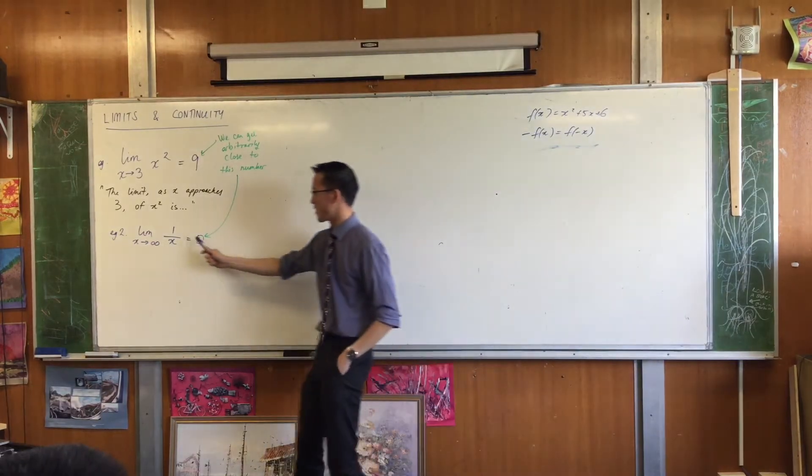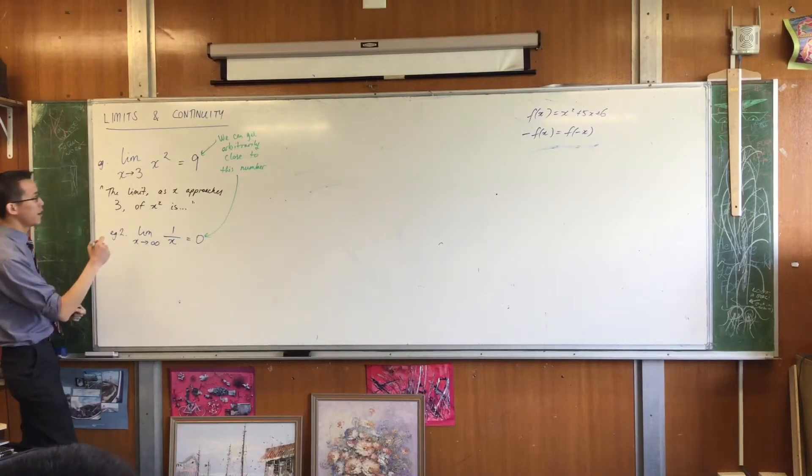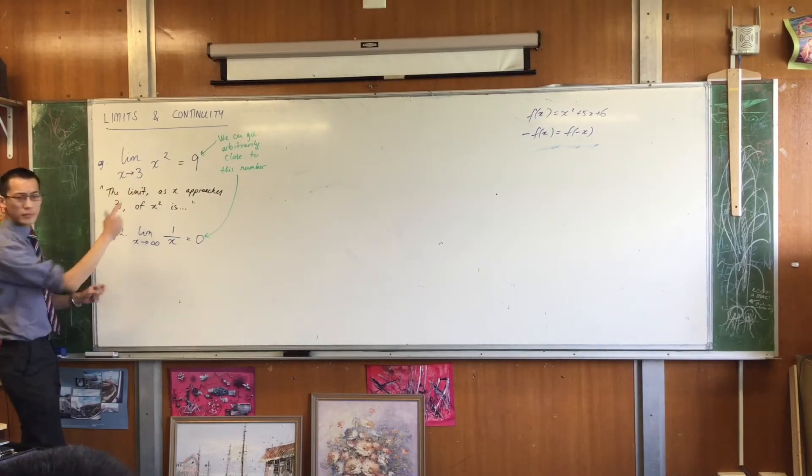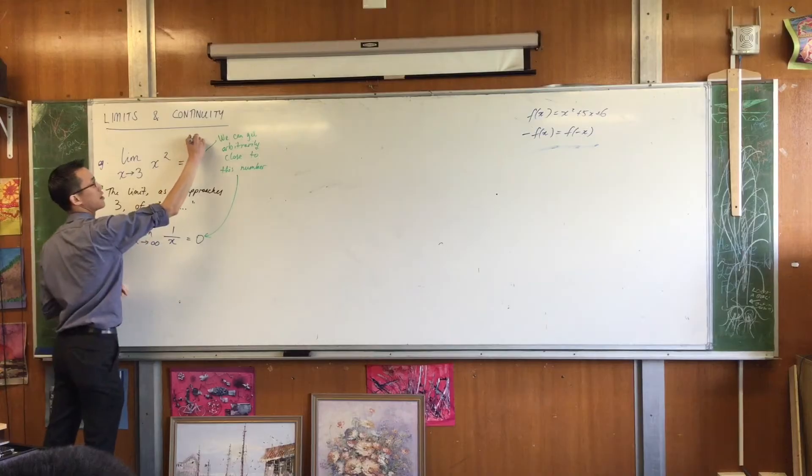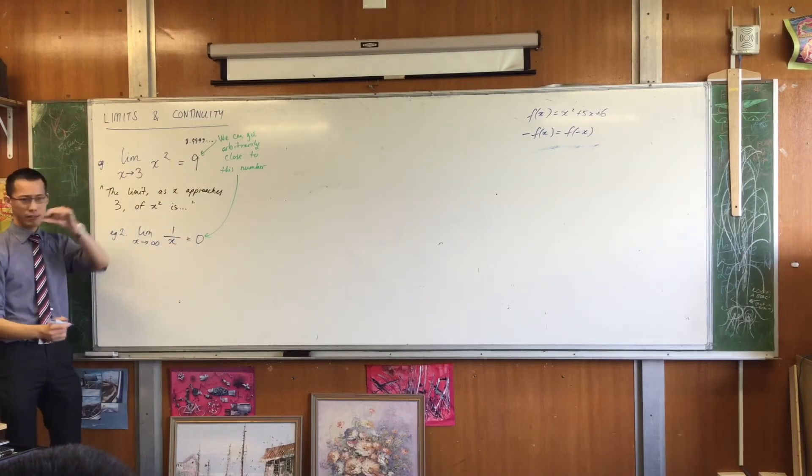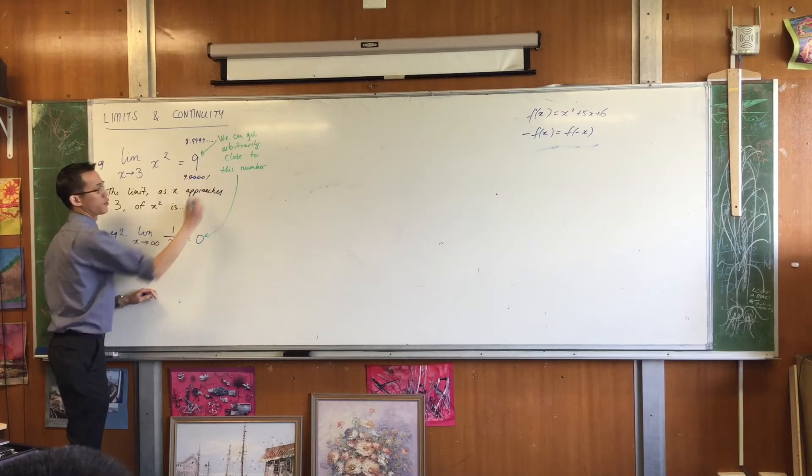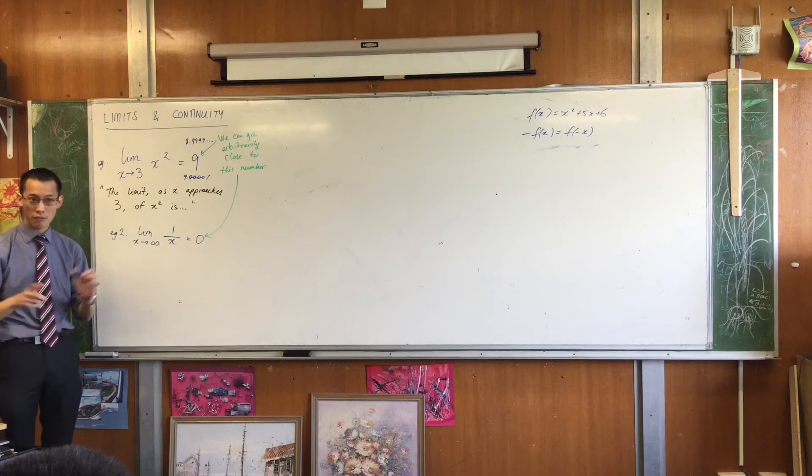But when you start thinking about this function here, immediately you come into some problems. So one of the important things about this is you remember I said you can approach and get really, really close values below 9, and you can also get really close values above, right?